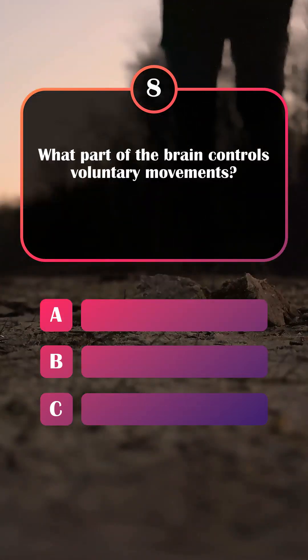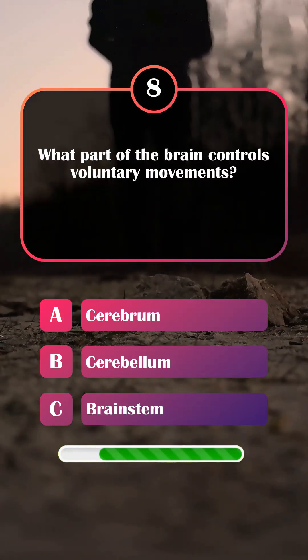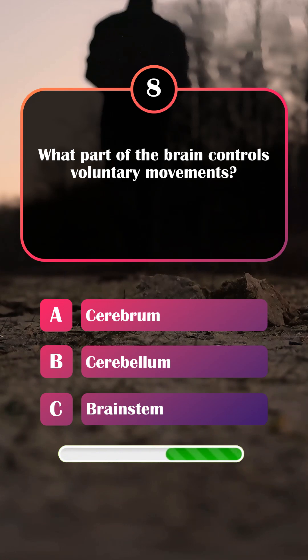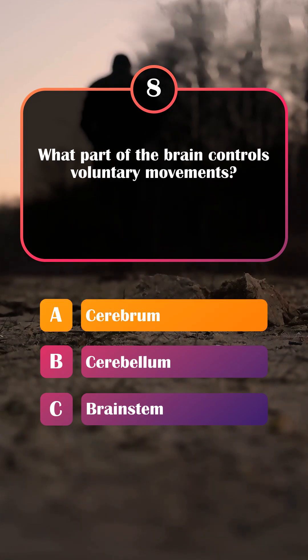What part of the brain controls voluntary movements? Cerebrum.